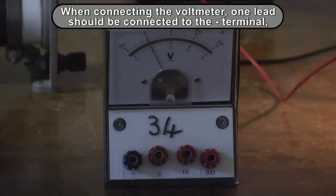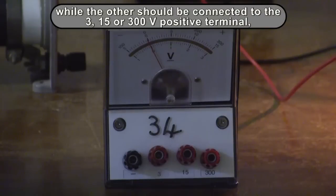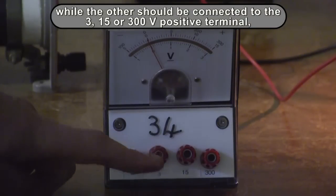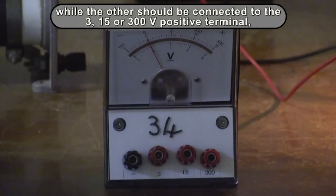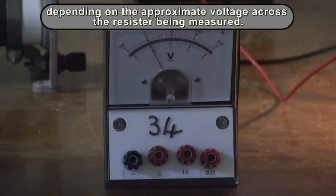When connecting the voltmeter, one lead should always be connected to the negative terminal, while the other lead must be connected to one of the three positive terminals. The choice of which terminal to use depends on the required range of measurement.